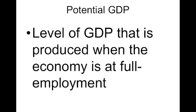Potential GDP is the level of GDP that's produced when the economy is at full employment. So when you have that ideal number of people working with no cyclical unemployment and all those people are actually making things, the total GDP the country produces when achieving the natural rate of unemployment is called potential GDP.